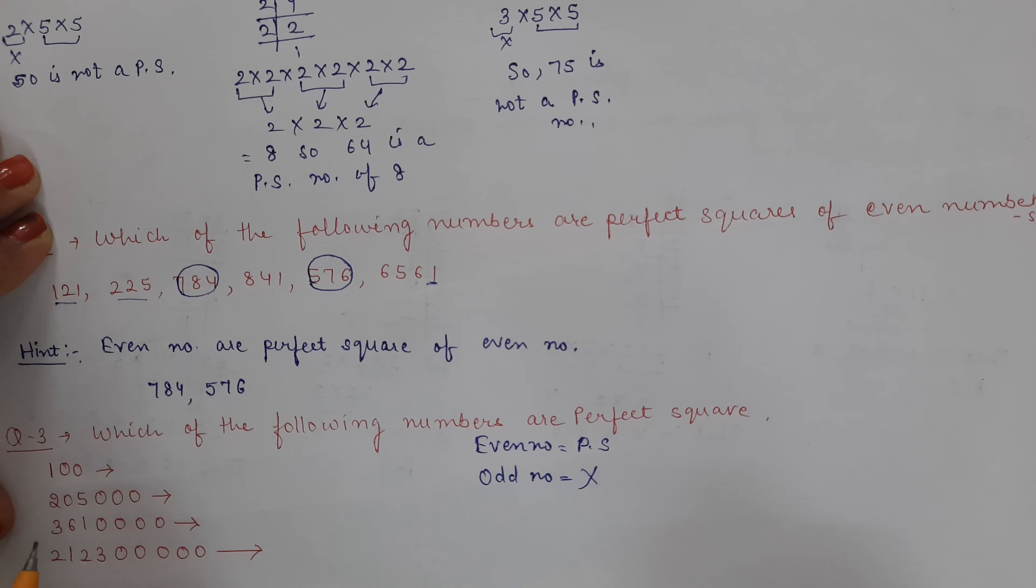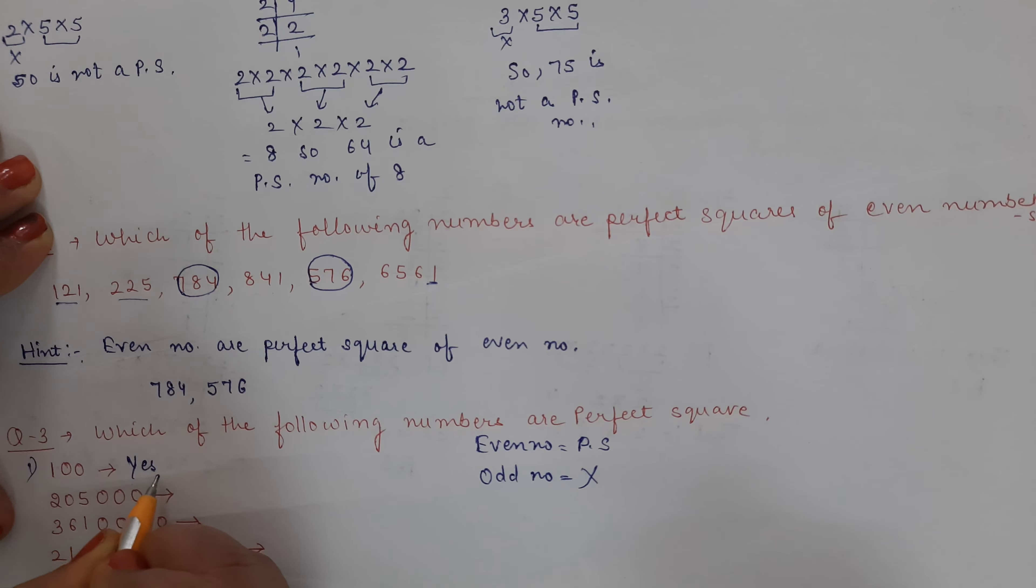Okay, so the first number is 100. How many zeros are there? Two zeros. So we write yes, having even zeros, so it is a perfect square number.